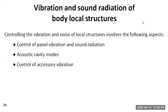For vibration and sound radiation of body load structures, controlling vibration and noise involves various aspects. First you control different panel vibrations and identify sources of different sounds or noise, ensuring minimal noise generation. Then you find acoustic cavity modes and try to cover those cavity modes. Finally, you control vibrations due to accessories inside the vehicle body. Controlling all these different aspects leads to a very improved NVH performance and a more comfortable vehicle body for passengers.